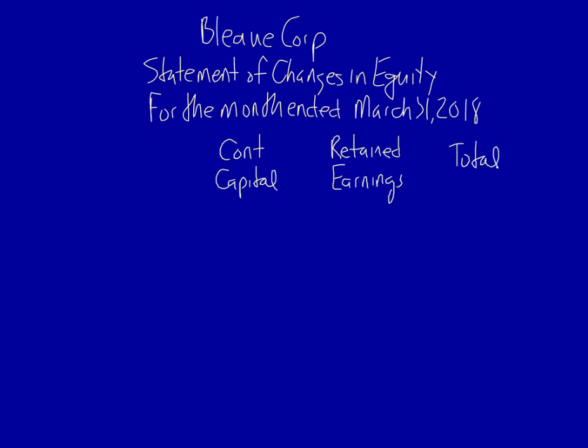As always we start with the company name, the name of the statement, and the period of time covered. The statement of changes in equity is in column format. Each item that shows up on the equity section of the statement of financial position has a column: contributed capital, retained earnings, and then a total column. I start of course with the beginning balance.